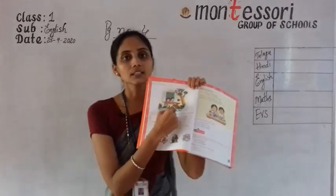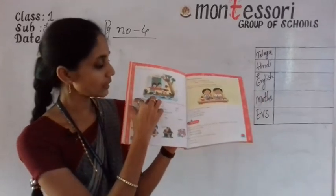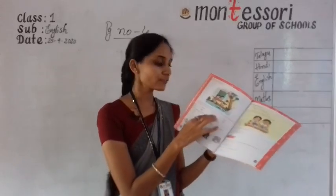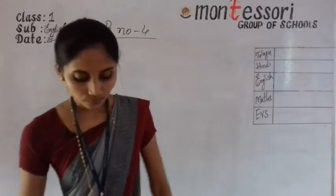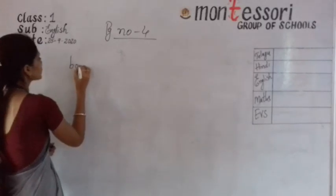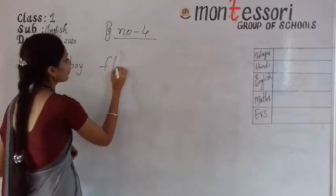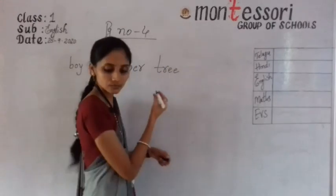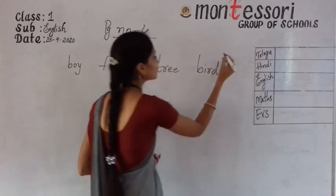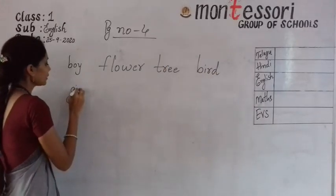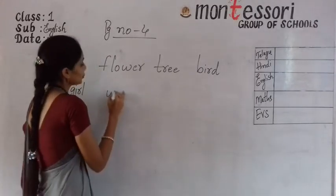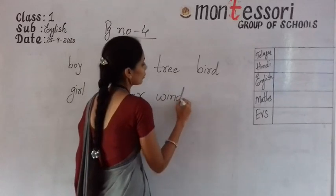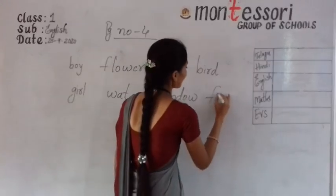Have you all seen this? Now, related to that picture, some words are given here. If you find that word in the picture, you have to circle it. If not, you don't need to circle it. What are the words? Boy, F-L-O-W-E-R flower, T-R-E-E tree, B-I-R-D bird, G-I-R-L girl, W-A-T-E-R water, W-I-N-D-O-W window, F-I-S-H fish.